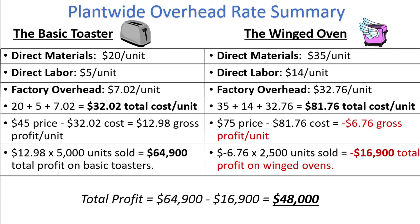Note that this total profit value of $48,000 will be the same regardless of what costing method you use — whether it be the plant-wide rate, a departmental rate, or an activity-based rate. So now that we've done all of this work, let's consider the question: if the Winged Oven is unprofitable, does that mean we should stop producing it? Well, not necessarily, and there are many reasons why.